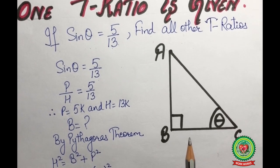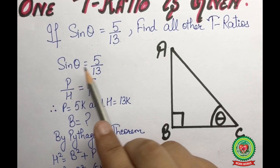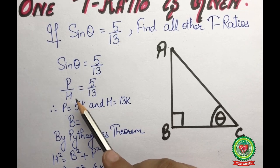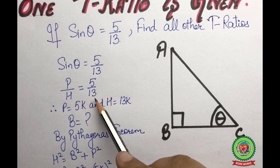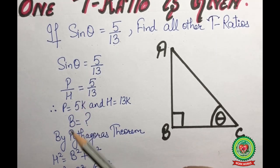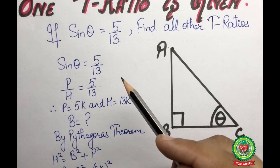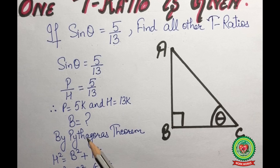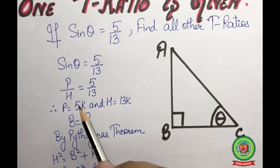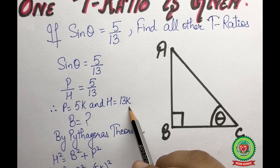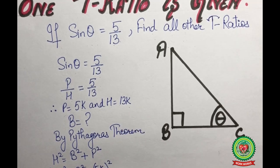We are given that sine theta is equal to 5 upon 13. We know that sine theta is equal to p upon h, so we get p upon h equal to 5 upon 13. Since this is a ratio, ratios are always in their simplest form, so we use a variable k. We get the value of p as 5k and the value of h as 13k.